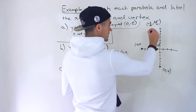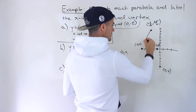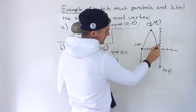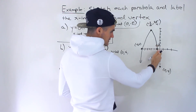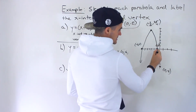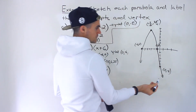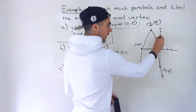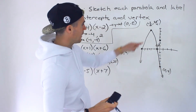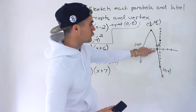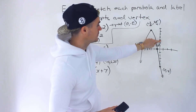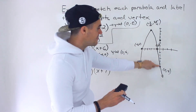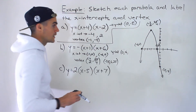Notice it makes sense: starting at the vertex, it has to go through both x-intercepts. As it keeps extending, the y-intercept will be somewhere down below — it crosses the y-axis at negative 6. If we had gotten a y-intercept of positive 3, that wouldn't make sense given the vertex and x-intercepts. It also makes sense that it opens down because the a-value is negative 1. So we can be confident we have the correct graph.